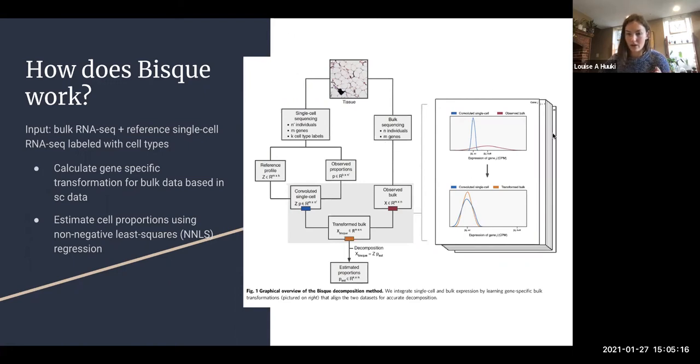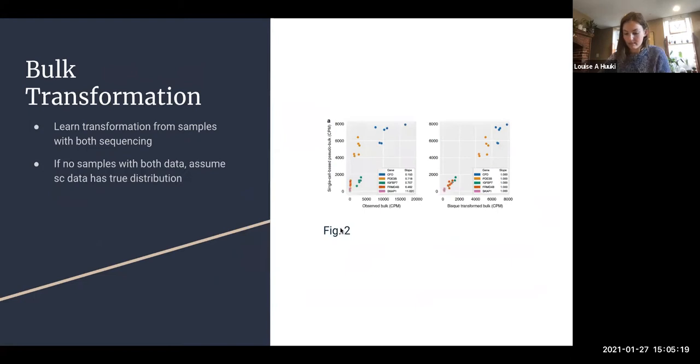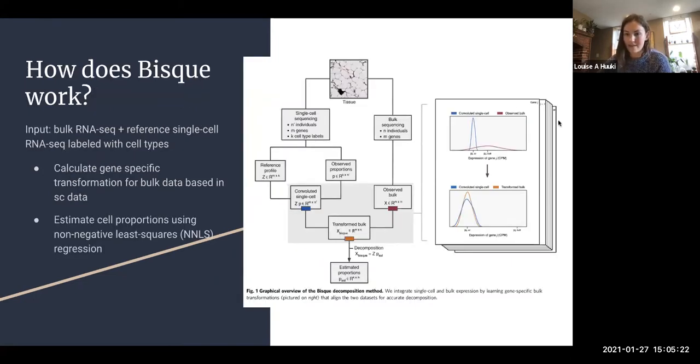This is what they're trying to show in this stack of papers, each page being a gene. The blue distribution is the single cell expression and the red distribution is the observed bulk. They use a transformation to get the bulk data to be more like this yellow curve, so it's more in line with what the single cell curve looks like. Then after they have that transformed bulk data, they do decomposition using non-negative least squared regression.